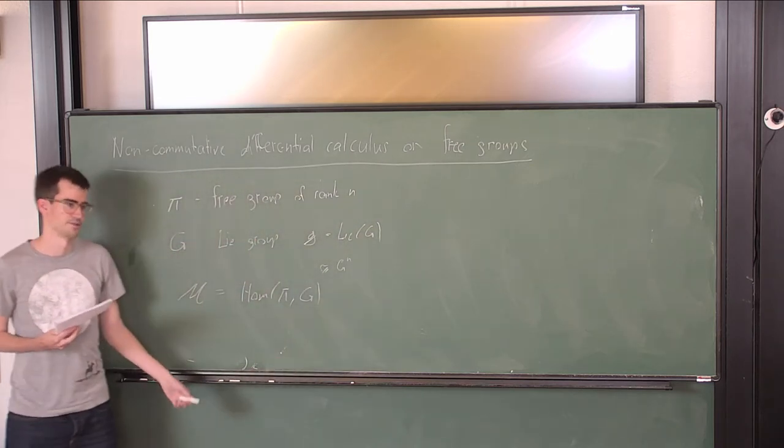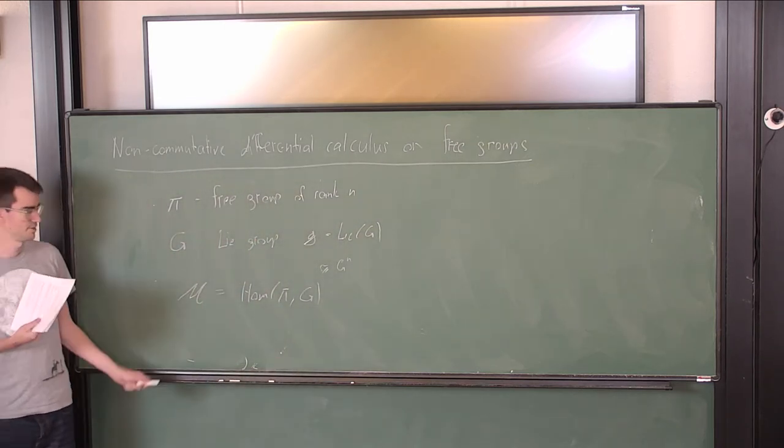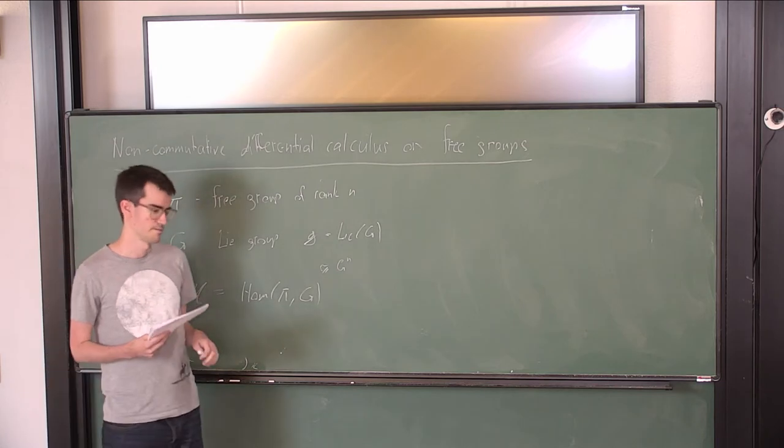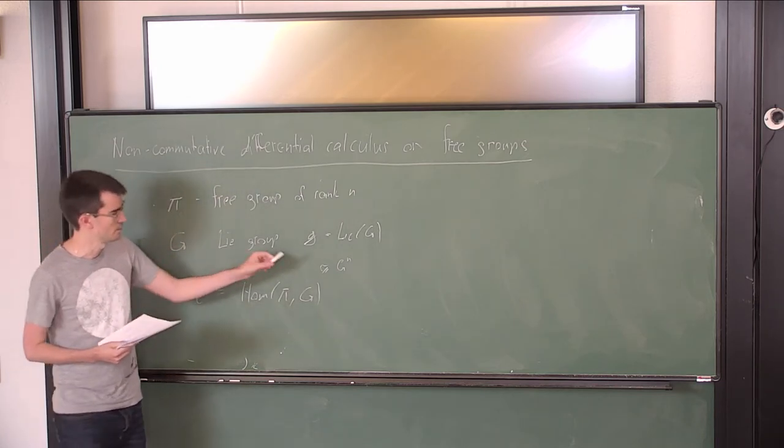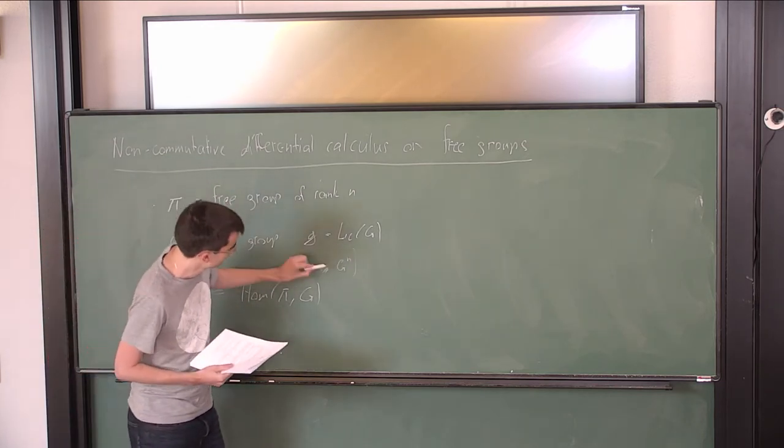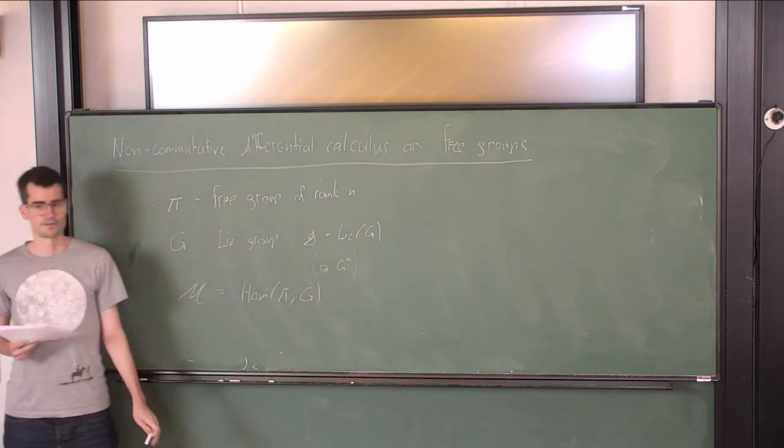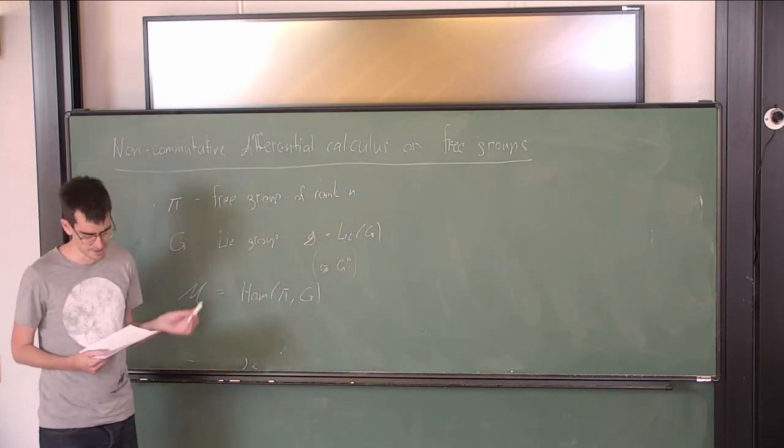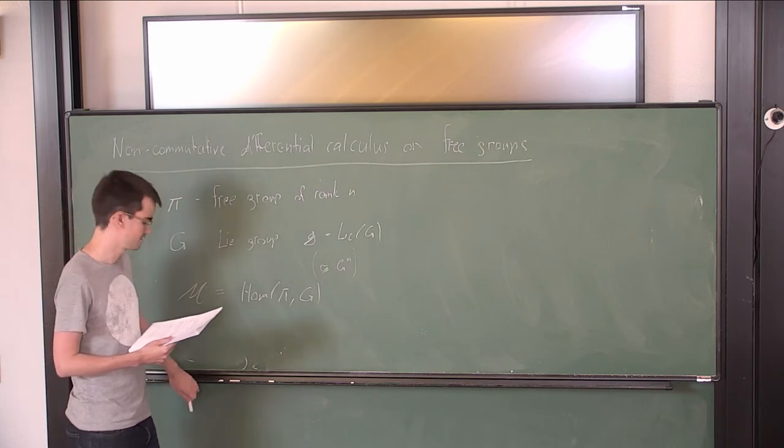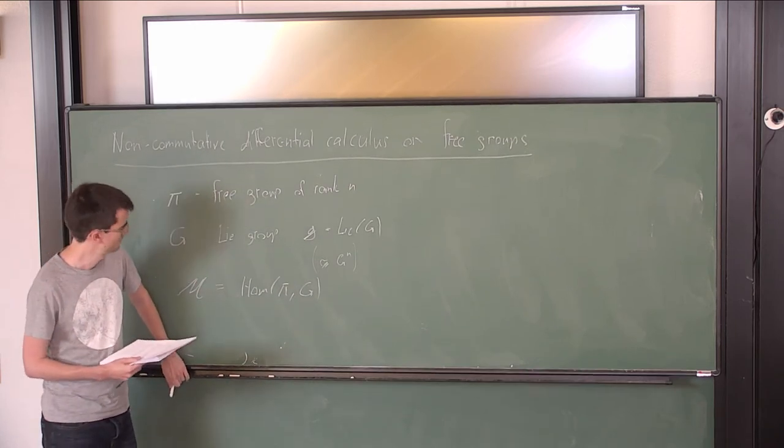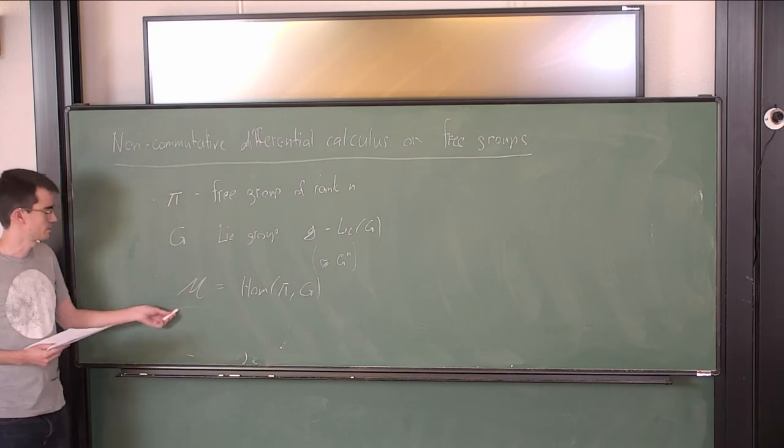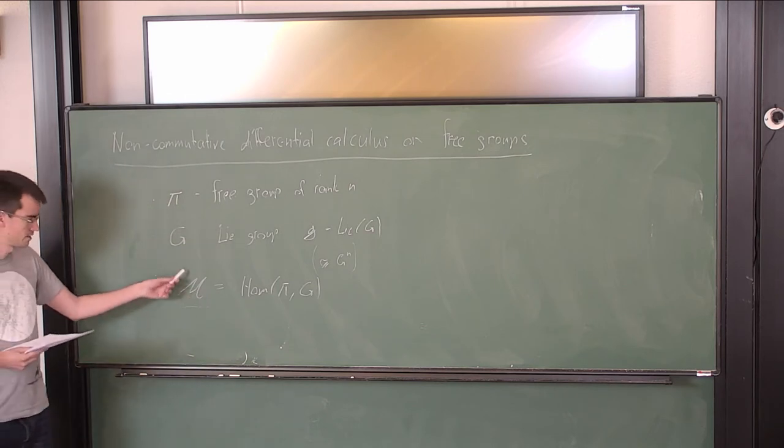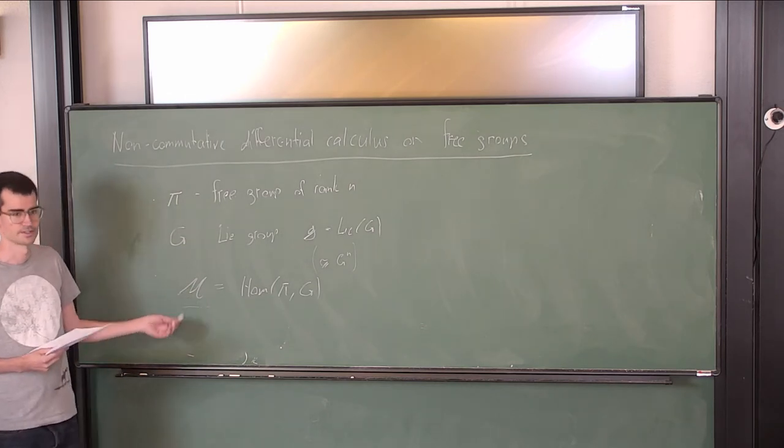The free group is just given by the image of whatever the generators are. The main point should be that I don't want to choose generators. It's isomorphic to that but it depends on choice of generators and I will try to avoid choosing generators as long as I possibly can. The goal is to study some differential forms or maybe differential operators on this space.